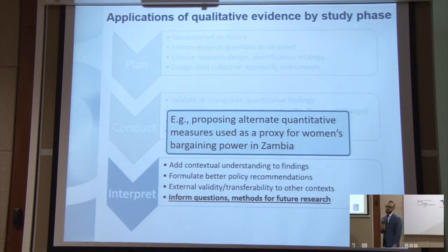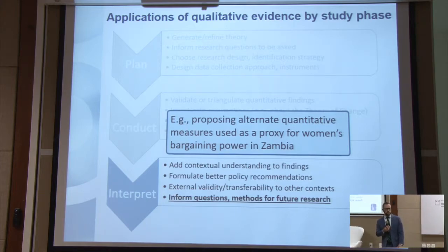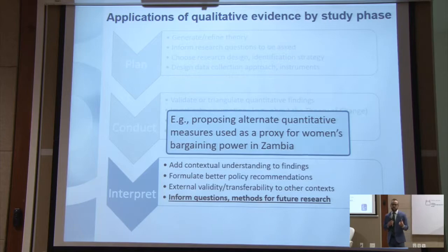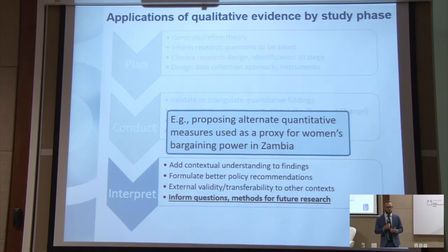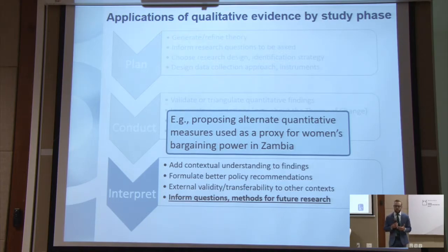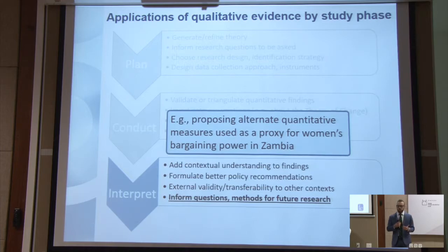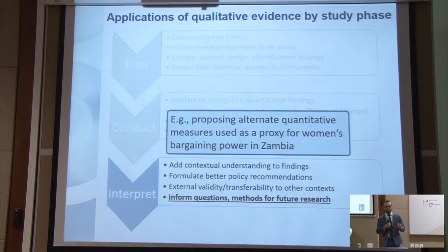There was an unconditional cash transfer impact evaluation in Zambia in which money was given to mothers of young children with the idea that this should increase decision-making authority in the household and increase bargaining power. What they found from their qualitative research is that the notion of decision-making authority was just not being understood in the way that they had intended. They wanted to know whether the woman of the household was actually making decisions that influenced what the family would do. But in many cases, the mothers were responding saying they have decision-making authority — and they found out later that meant 'as long as my husband agrees.' As soon as the husband disagreed, the decision would be overturned.